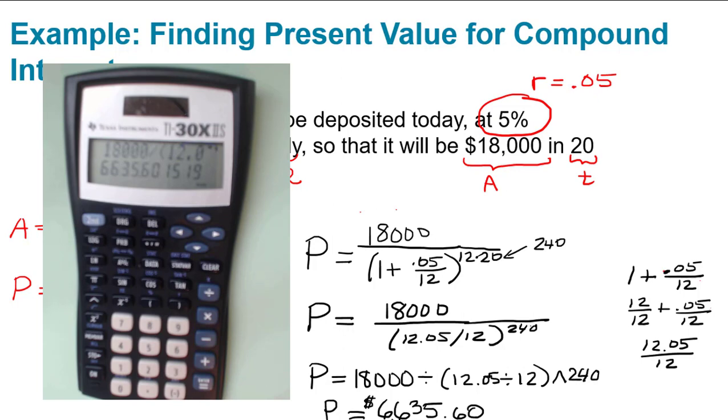That's the present value, or the principal, that would have to be invested to get that 18,000 in 20 years.